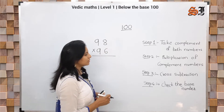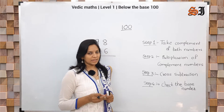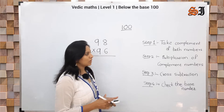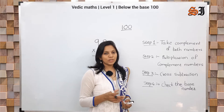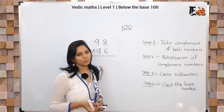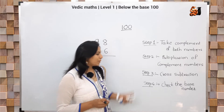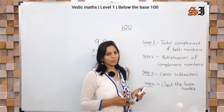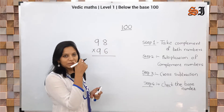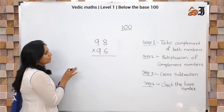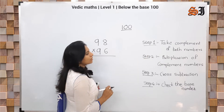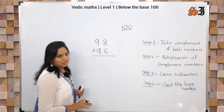When you study this new method, keep one notebook ready and write the new steps in it. That way it will be easy to remember. Make a separate notebook for Vedic Maths. Let's look at the first step — write it down and observe. Step 1: Take the compliment of both numbers.